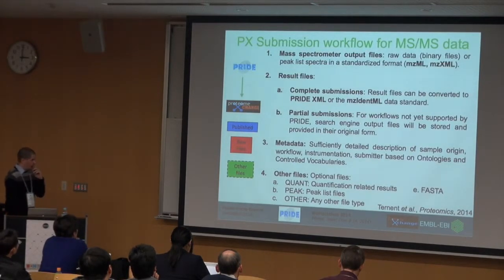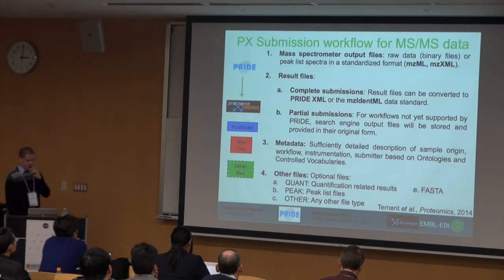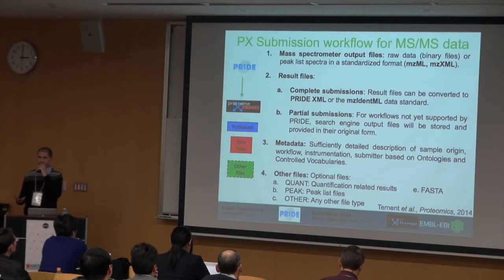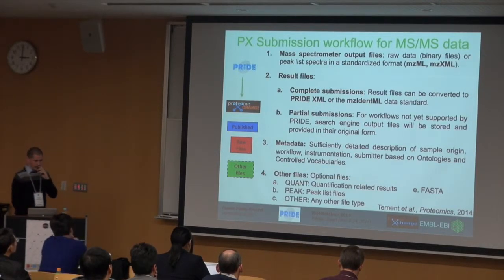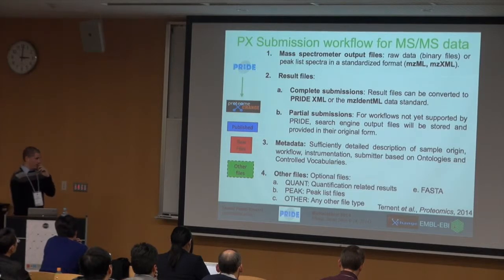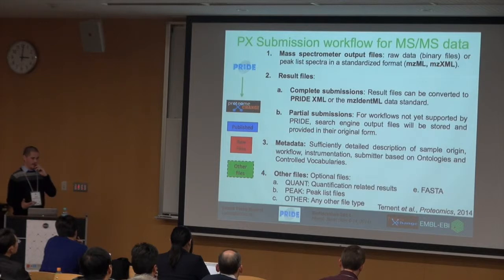The submission process can be done in two ways: a partial submission, which is basically just the raw data submitted to ProteomeXchange, or a complete submission, where you submit your raw data, your peak list, and also the final results.